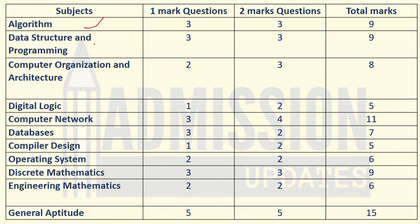The second subject is Data Structures and Programming. Three one-mark questions were asked and then three two-mark questions were asked, with a total of nine marks allotted to this subject.